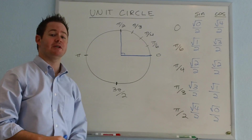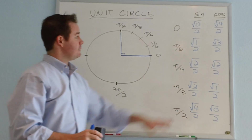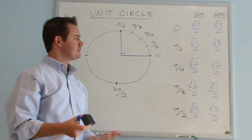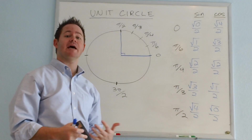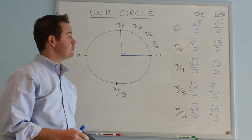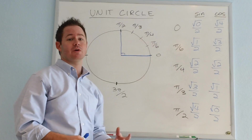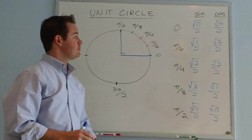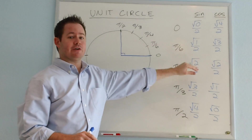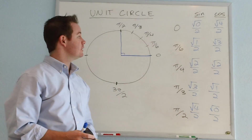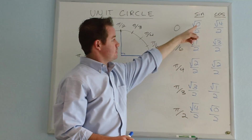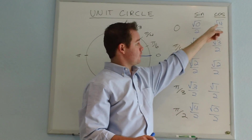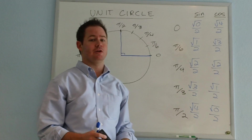Now some of you who have been given the unit circle to memorize in class might be looking at the chart we've created and saying to yourselves, well that doesn't look like the exact values we had to memorize. That's because some of these values we can now reduce to find the corresponding value that matches up at each point. This is the best way to memorize that material quickly because your sine values just go 0, 1, 2, 3, 4 in the numerator, and your cosine values go root 4, 3, 2, 1, 0 in the numerator.